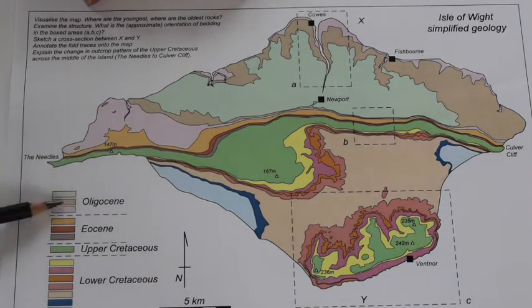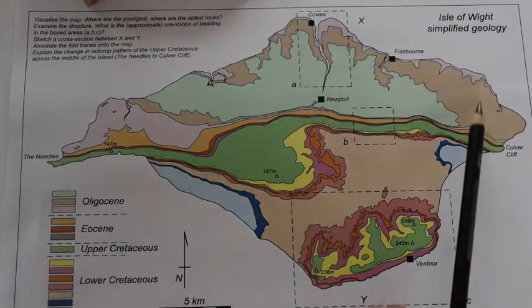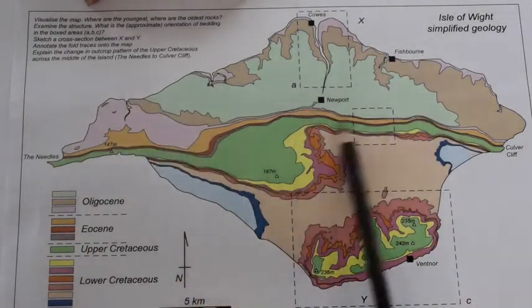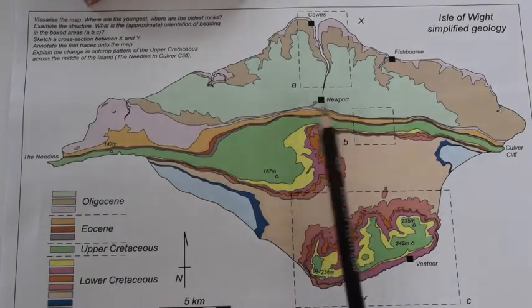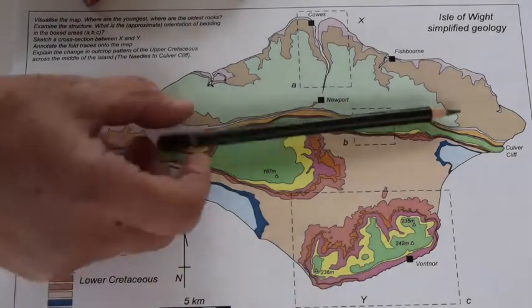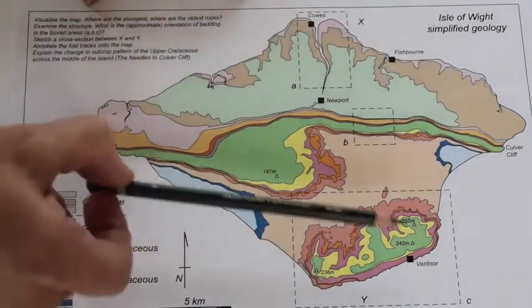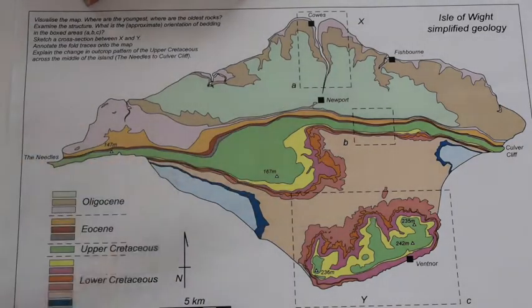The youngest strata, the Oligocene, well they lie around here on this northern area, essentially between Newport and up to the north coast. So that's where the strata are generally distributed.